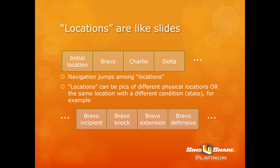Let's take a step back and look at what a location in SIMS You Share means. A location is just like a slide. Your first location is automatically called initial location — you can rename them. As you add new locations, you name them like Bravo, Charlie, Delta. These are just like slides in PowerPoint. You set up navigation to jump among those locations — alpha left going to Bravo, right going to Delta, and so forth.